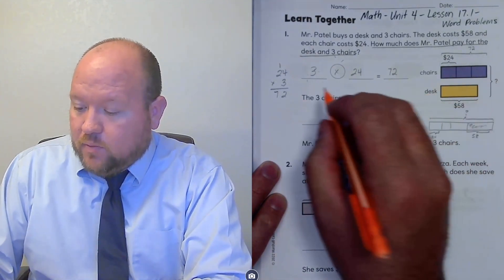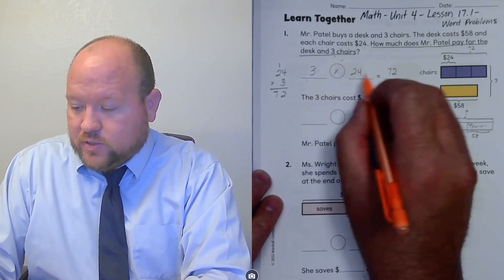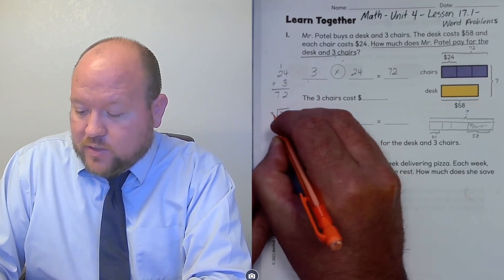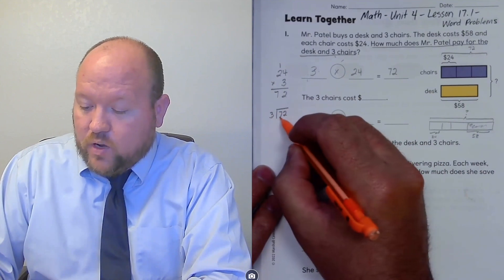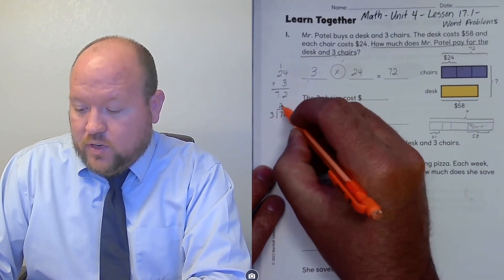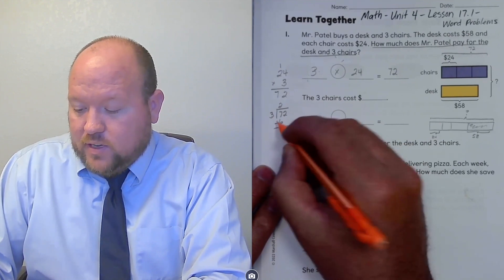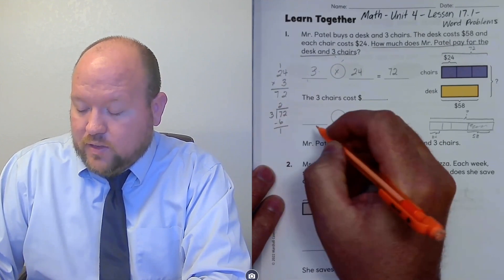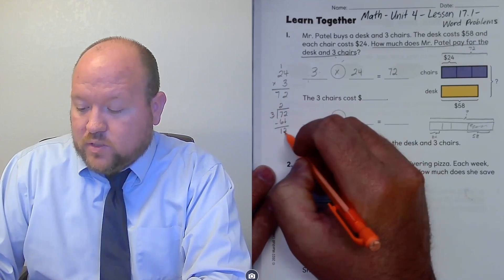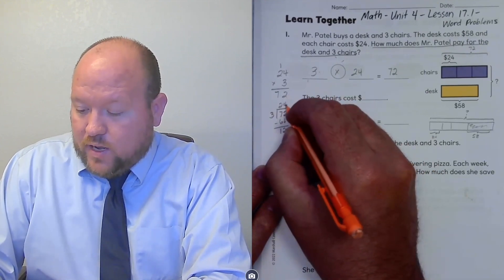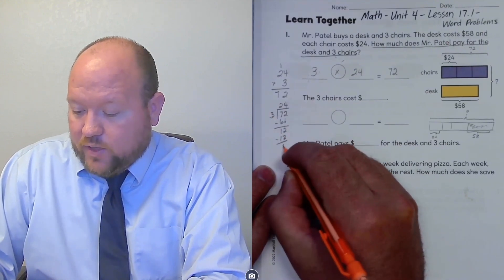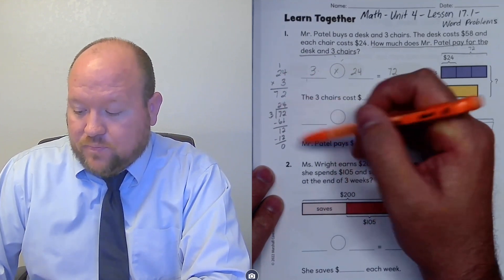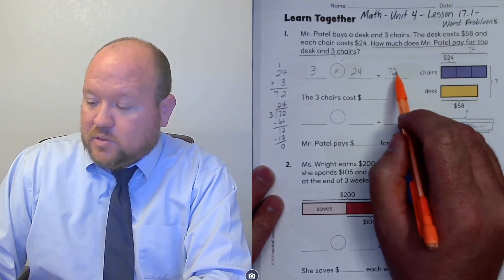Now we would want to use long division to check this. Three goes into 7 two times; two times three is six, so now we subtract out that 60. Seven minus six is one. Bring down the two. Three goes into 12 four times; four times three is 12; 12 minus 12 is zero. All long division does is the multiplication backwards. So 72 is confirmed correct.